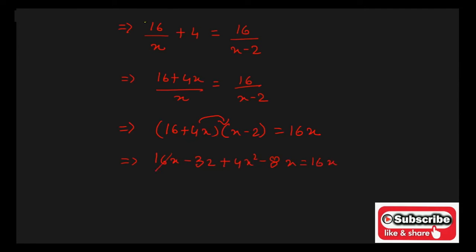From both the LHS and RHS, 16X and 16X got cancelled. The remaining is 4X square minus 8X minus 32 is equal to 0.